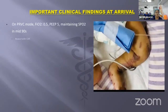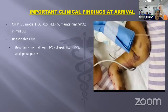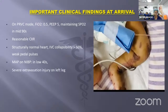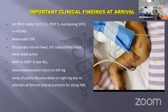On arrival, the child was intubated on PRVC mode with FiO2 of 0.5, PEEP of 5, maintaining saturation in mid-nineties. Heart was structurally normal. IVC collapsibility was greater than 50% and pedal pulses were weak. MAP on NIBP was in the low forties. She had a severe extravasation injury on her left leg and patchy discoloration on her right leg from femoral arterial puncture attempts.